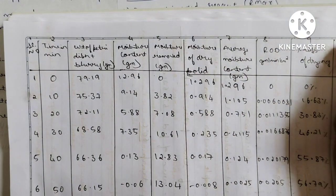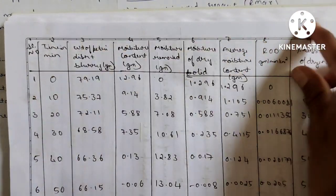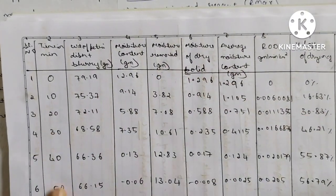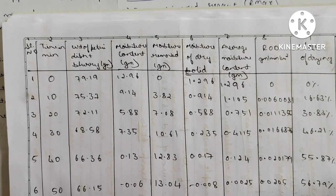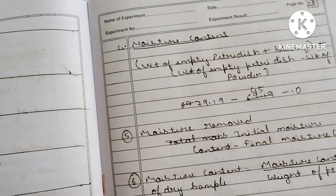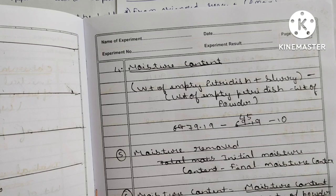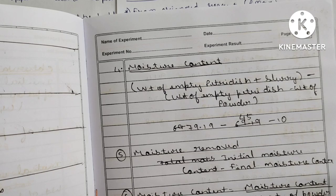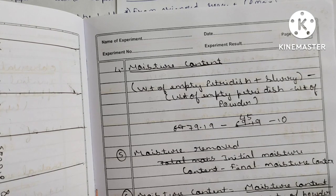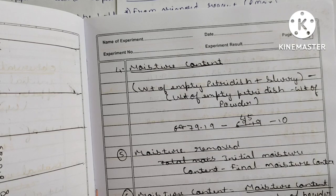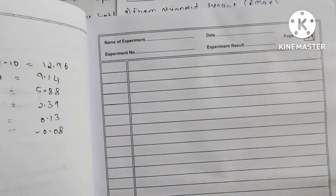You have to identify the tabular column headings on your own — there are tricks for that which you already know from your engineering lab. If you don't know how to calculate, go to YouTube and search 'ball mill experiment calculations' or 'sieve analysis experiment' — you will get videos. Watch those and take advantage of them.